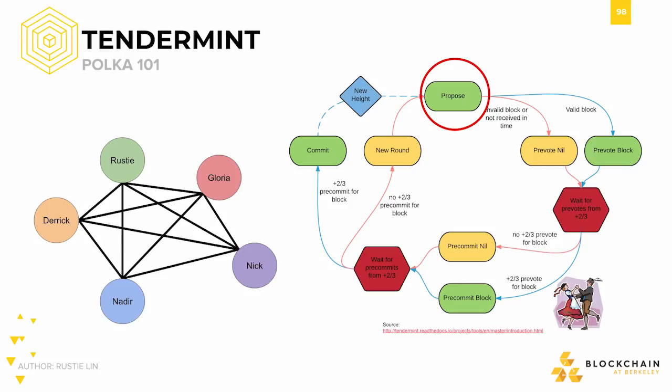Then in the first round, called pre-vote, the rest of the validators can either pre-vote the block or pre-vote nil. Pre-voting the block indicates that the validator marked the block as valid. Pre-voting nil either means that the validator marked the block as invalid or failed to respond within time, possibly due to network timeout, power outage, or some other arbitrary reason. If we receive more than two-thirds pre-votes, that's called a polka — hence the image of the two people dancing in the bottom right corner.